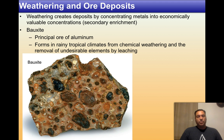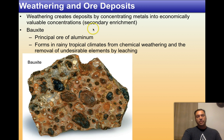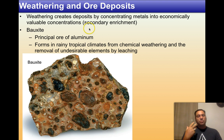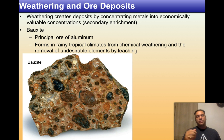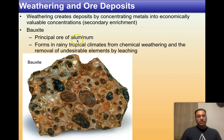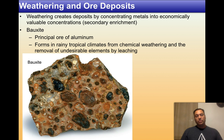Weathering creates deposits by concentrating metals into economically valuable concentrations — this is called secondary enrichment. Remember those oxisols with the red color? Everything was being leached out, but iron and aluminum oxides were retained and even concentrated, producing bauxite — a mineral and the principal ore of aluminum. It's aluminum oxide found in rainy tropical climates from chemical weathering and the removal of undesirable elements by leaching, essentially coming from what you'd consider the E horizon. This is where we get most of our aluminum products from. Bauxite is the most economical source of aluminum.